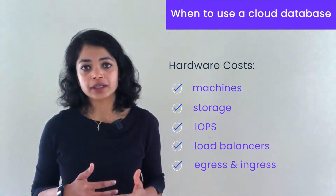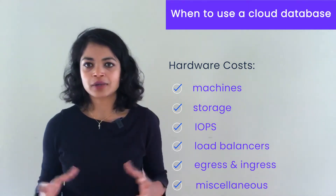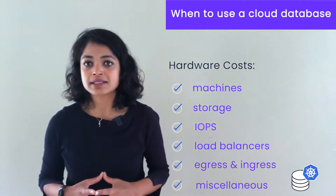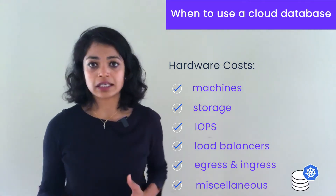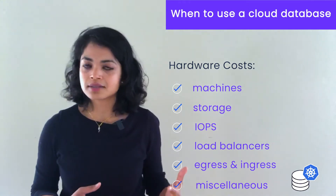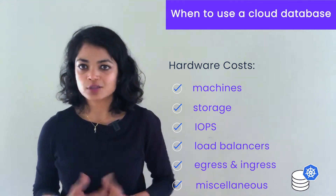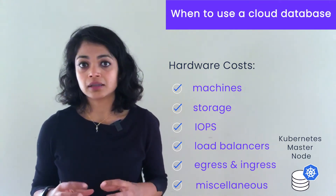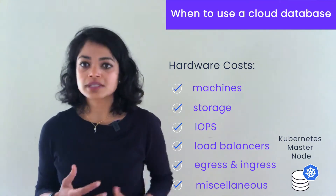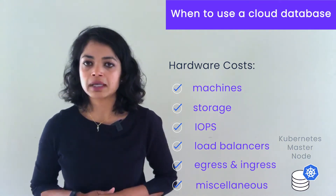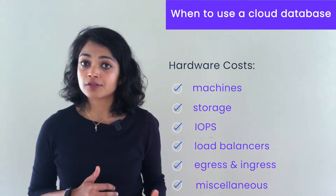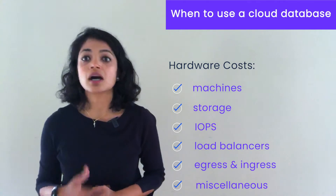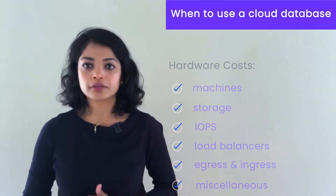The final category is a miscellaneous one. This is particularly relevant if you're running your database in a Kubernetes service like GKE in Google or EKS, the elastic Kubernetes service. The Kubernetes master node ends up being a sizable chunk of your hardware costs, so it's another thing to keep in mind. This is not meant to be a comprehensive list, but it covers the most common types of hardware costs when trying to run a database.